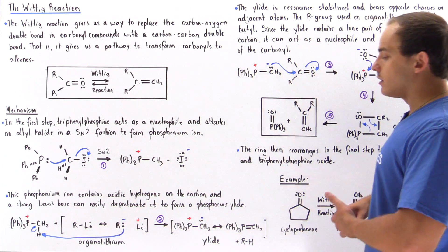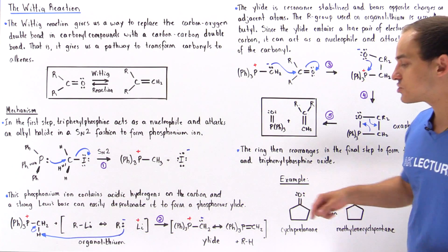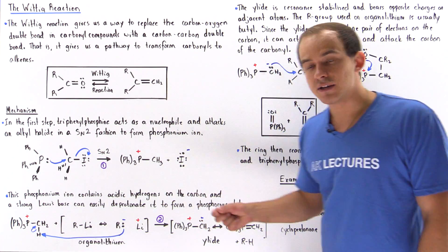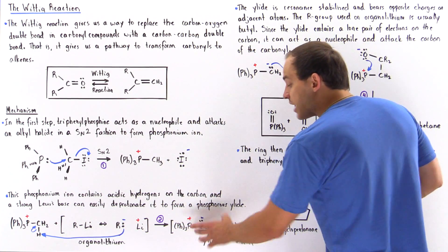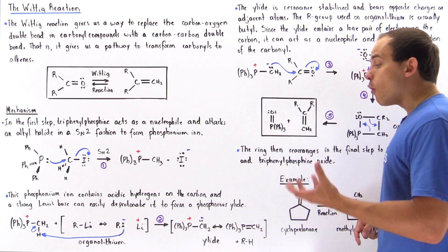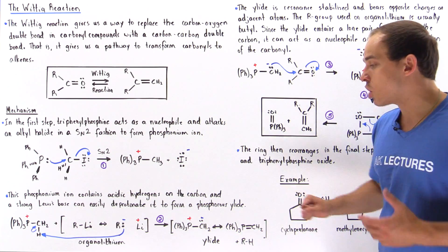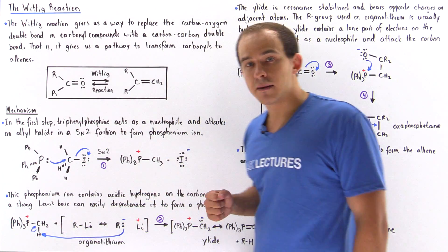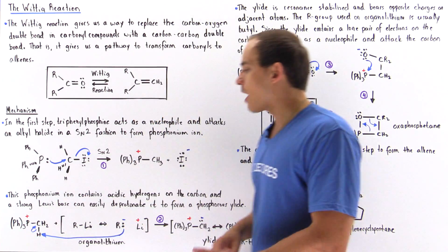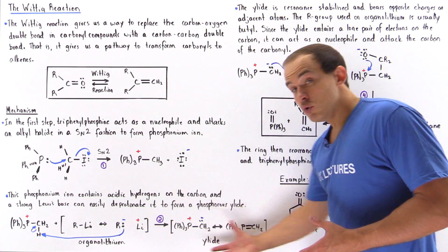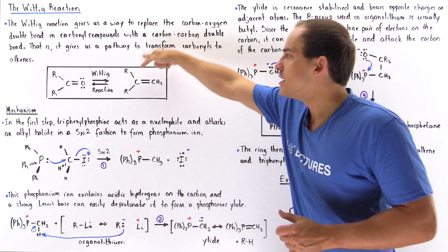Because carbon has too many electrons and phosphorus has too few, a double bond forms in the second resonance structure, making the elide resonance-stabilized. We also form a hydrocarbon byproduct — if the R group is a butyl group, we form butane when the base removes the H. This elide is the nucleophile that we need to react with the carbonyl group to form the alkene.